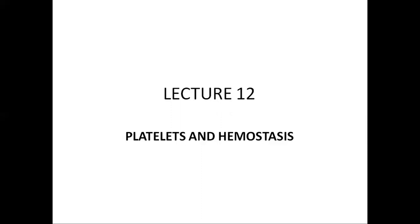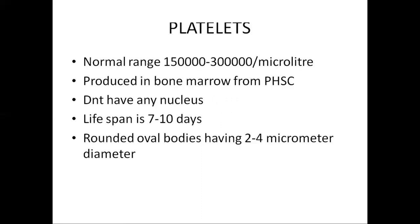Today we will start our new topic: platelets and hemostasis. Platelets are also called thrombocytes. Their normal value is 150,000 to 300,000 per microliter. All blood cell lines are produced from the bone marrow, and so are the platelets. Platelets are formed from the pluripotent hematopoietic stem cells.